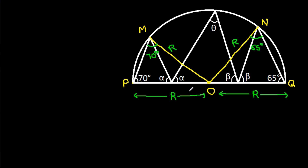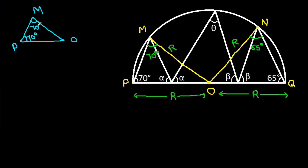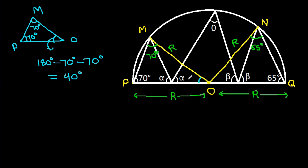Now in triangle OMP, this angle is 70 degrees and this angle is 70 degrees. So the angle at O will be 180 minus 70 minus 70, that will be 40 degrees. So this angle will be 40 degrees.